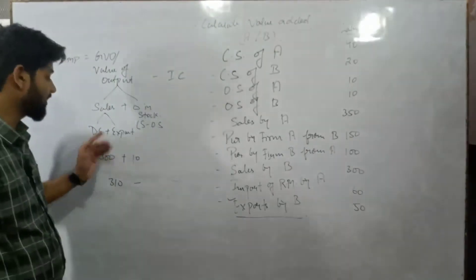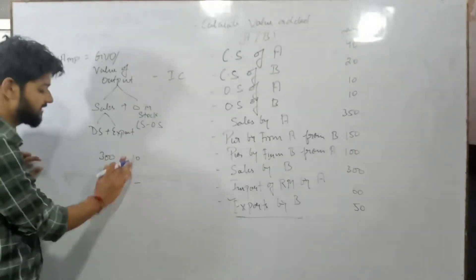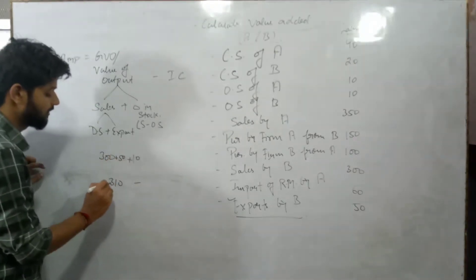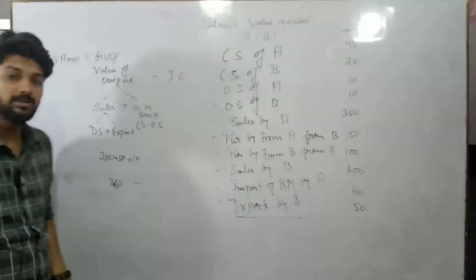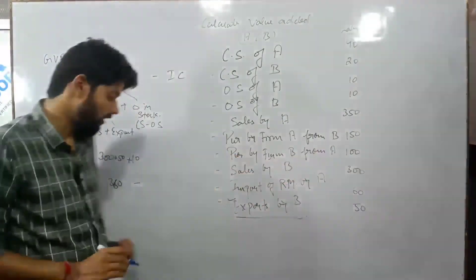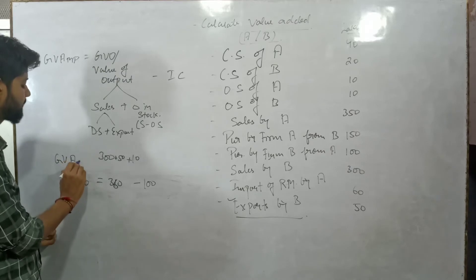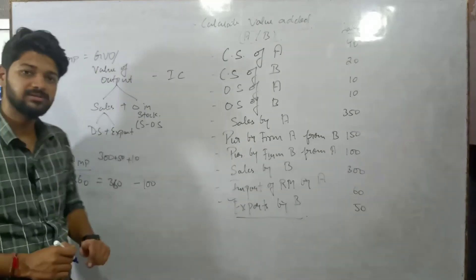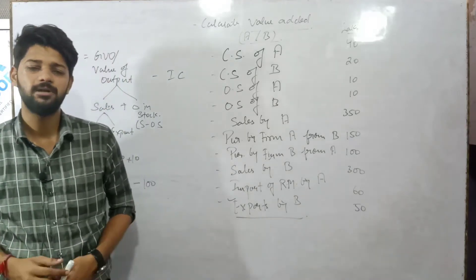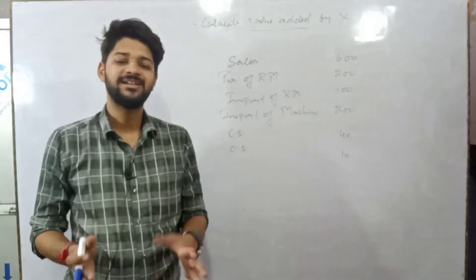So Firm B's Sales were 300, plus Export of 50 gives 350, and adding the Change in Stock of 10 gives a Total Value of Output of 360. Deducting Intermediate Consumption of 100 gives 260 lakh — that is Gross Value Added at Market Price for Firm B. And for Firm A, the answer was 170 lakh.